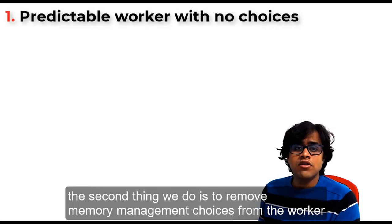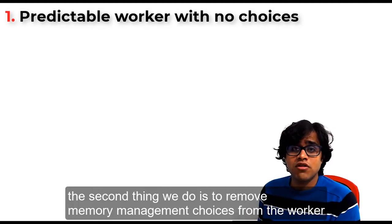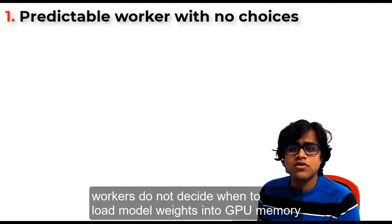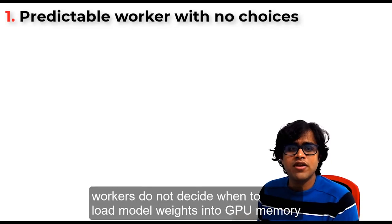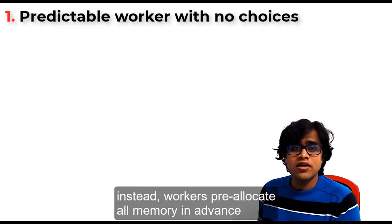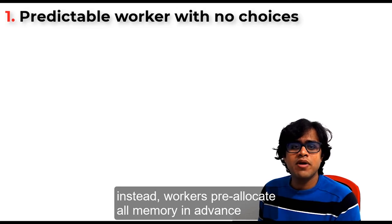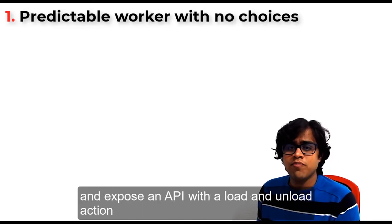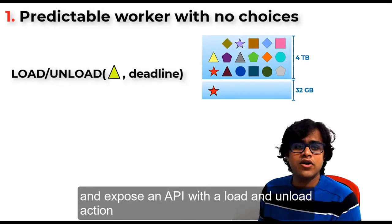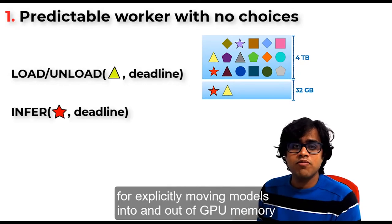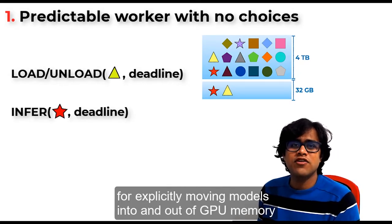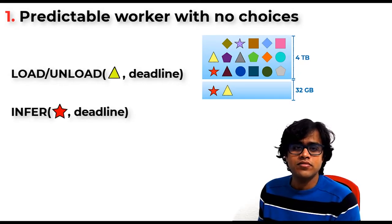The second thing we do is to remove memory management choices from the worker. Workers do not decide when to load model weights into GPU memory. Instead, workers pre-allocate all memory in advance and expose an API with a load and unload action for explicitly moving models into and out of GPU memory.